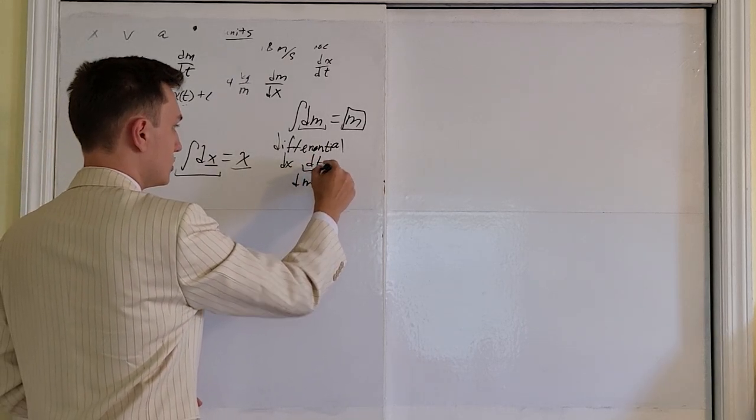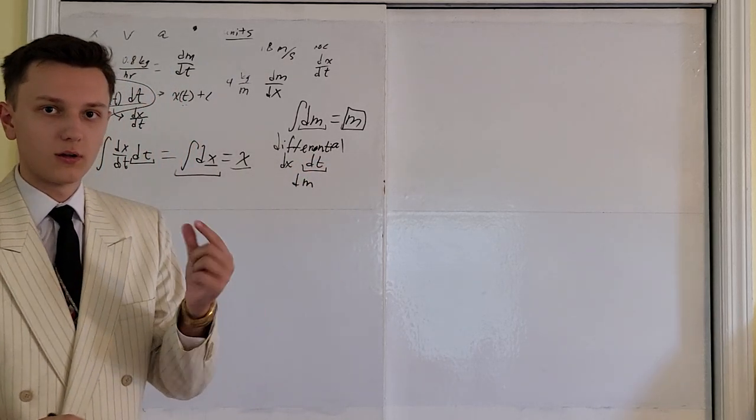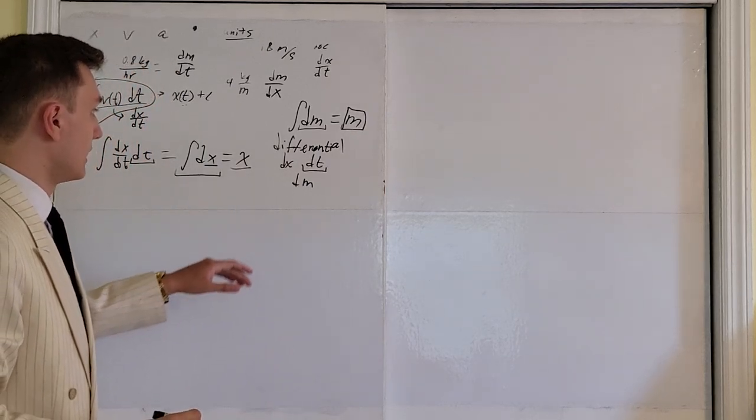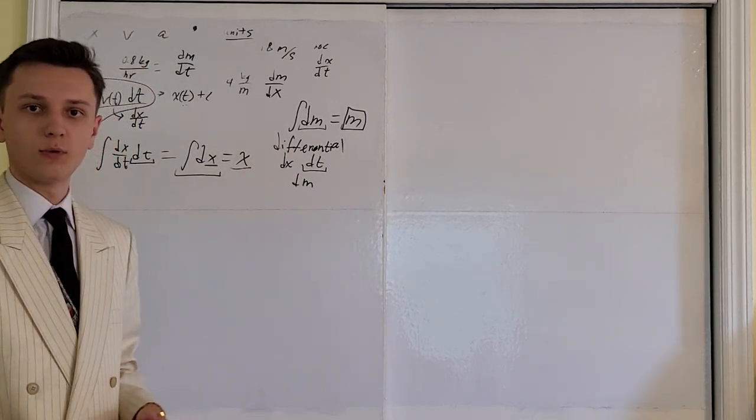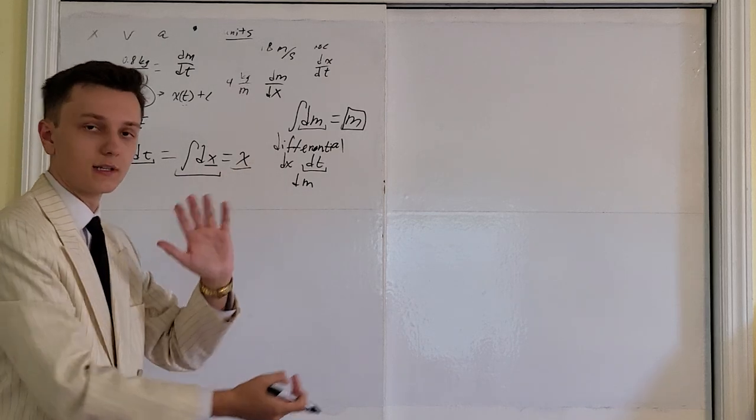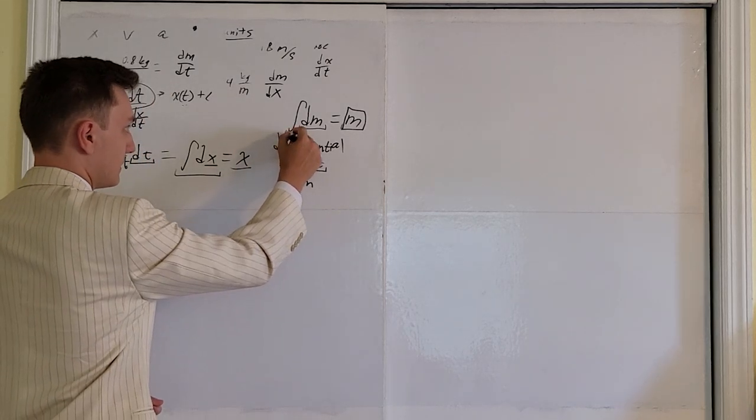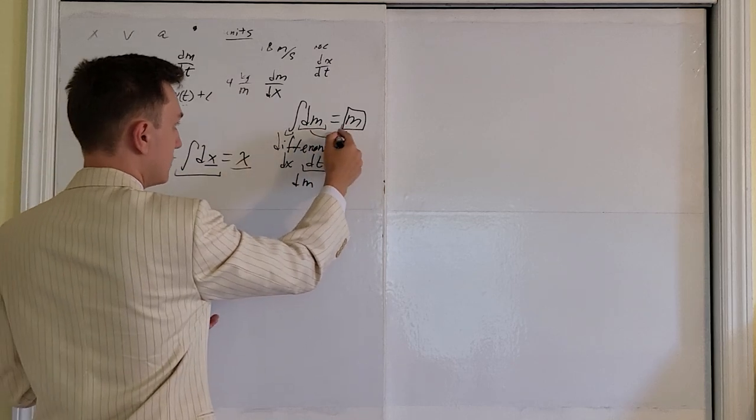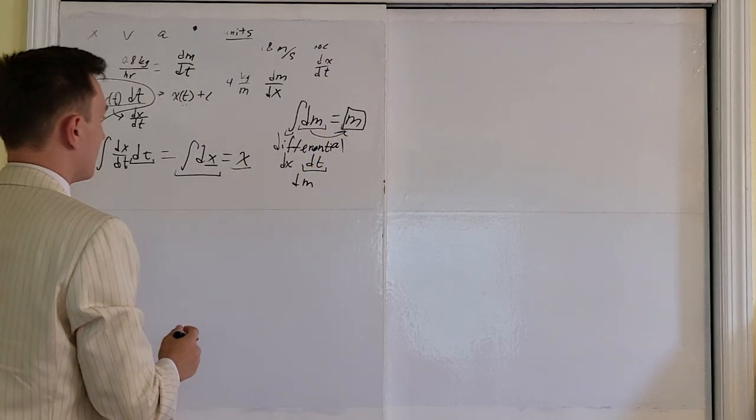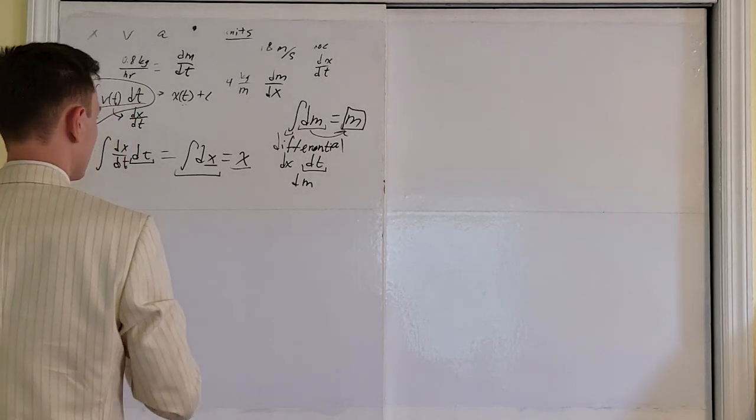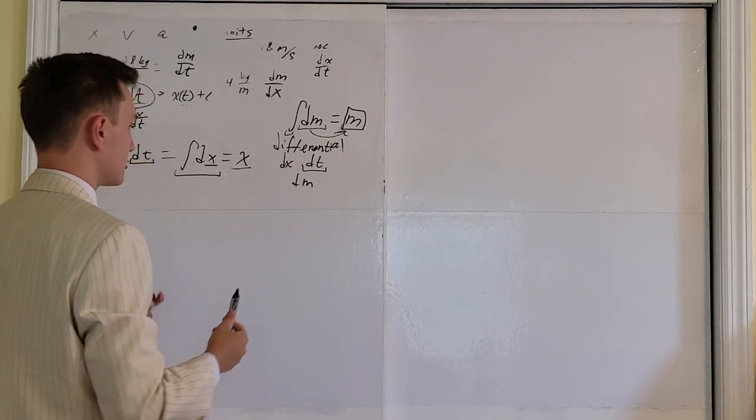A differential is just an infinitely small section of something. So a dm is an infinitely small mass. A dt is an infinitely small time. A dx is an infinitely small distance. So if I sum up an infinite amount of those, you can see why that gets me my total mass, my total distance, my total time. That is going to allow us to gain a much better understanding of the derivative.